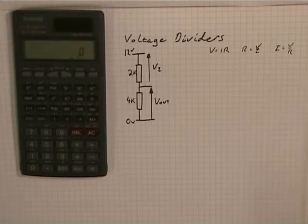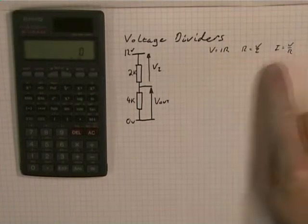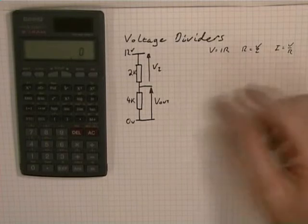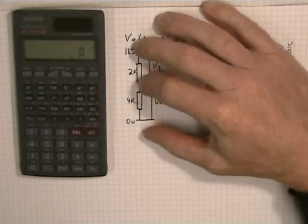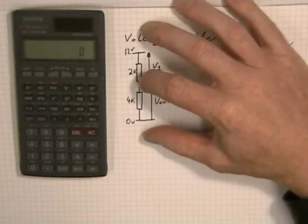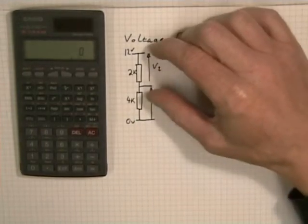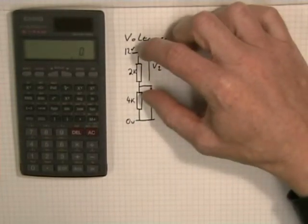Looking for somewhere to start, we need to know, to use any of the Ohm's laws, we need to know two things to find the third. So if we look at the start down here, it's V out I'm after in the end. I only know down here 4k. I only know one thing. Up here, I only know 2k.